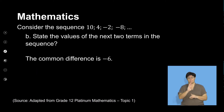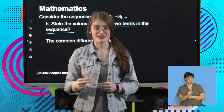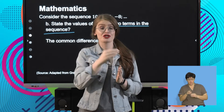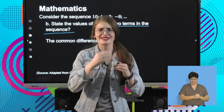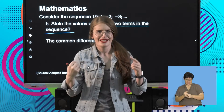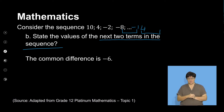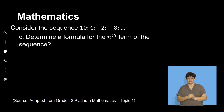Let's move to question B. We now need to state the values of the next two terms in the sequence. We've established that the common difference is negative 6. So in order to determine the next two terms, I'm going to subtract 6 from the last term given, and then subtract 6 again. Negative 8 minus 6 gives me negative 14. Then subtracting 6 again gives me negative 20. So the next two terms of the sequence are negative 14 and negative 20.